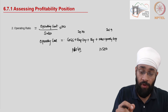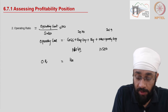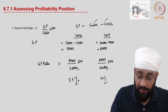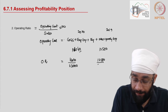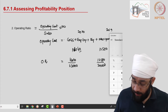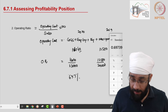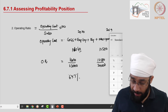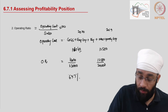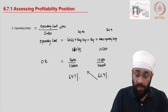Now divide by sales. Operating Ratio for 2020 = 16,040 / 23,000 = 69.7%. For 2019: 12,580 / 20,000 = 62.9%. So the operating cost ratio has increased from 62.9% to 69.7% between 2019 and 2020.